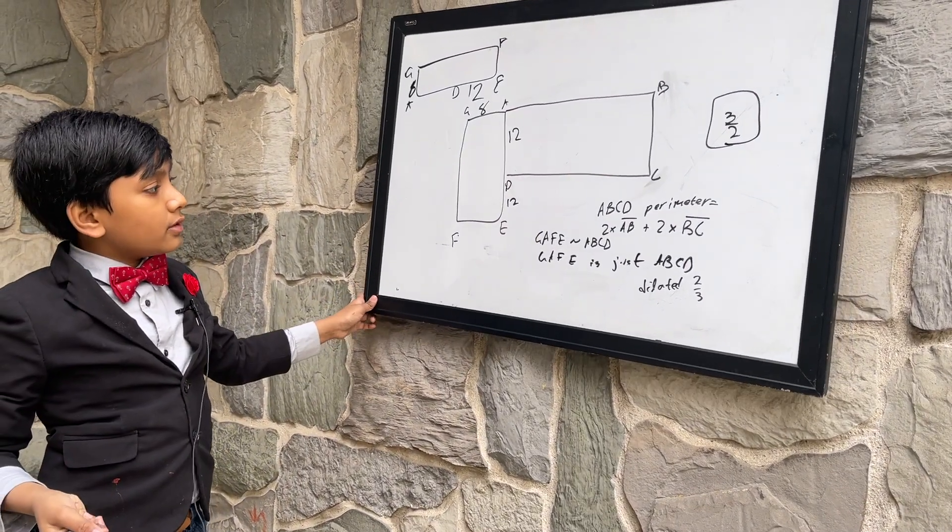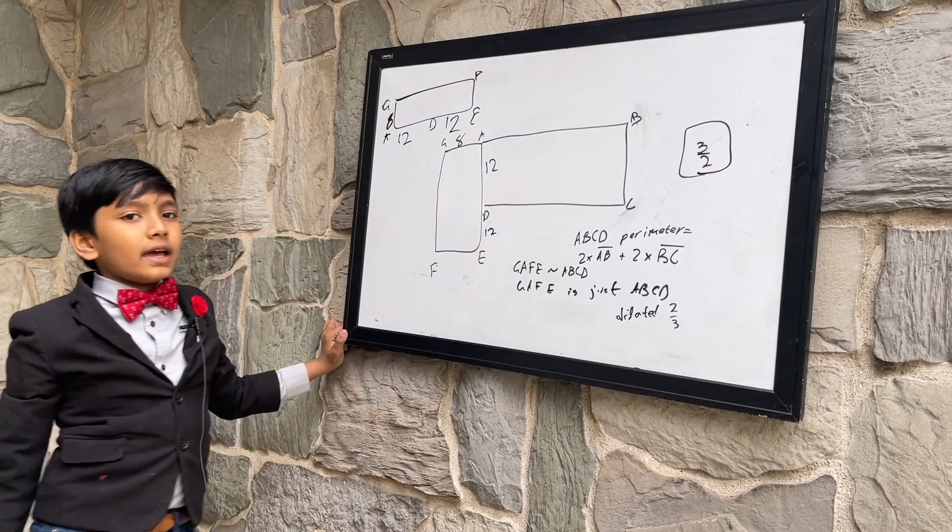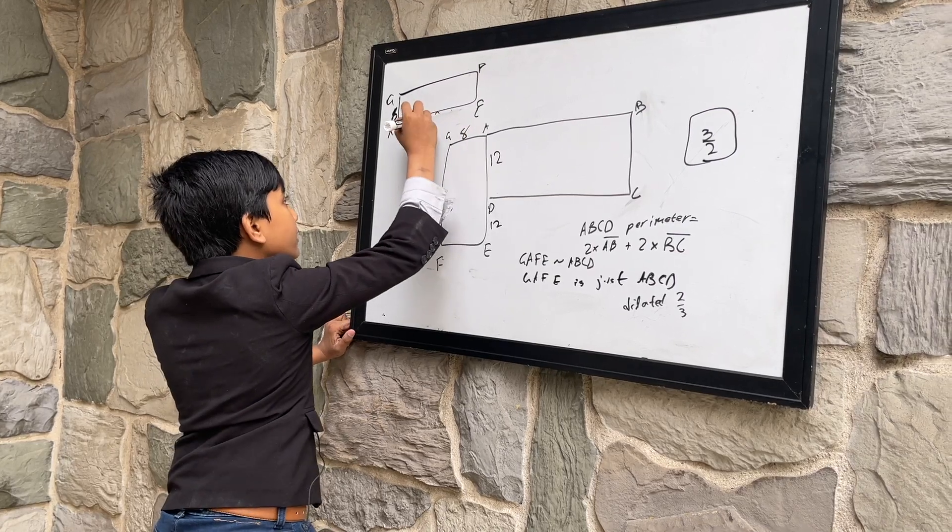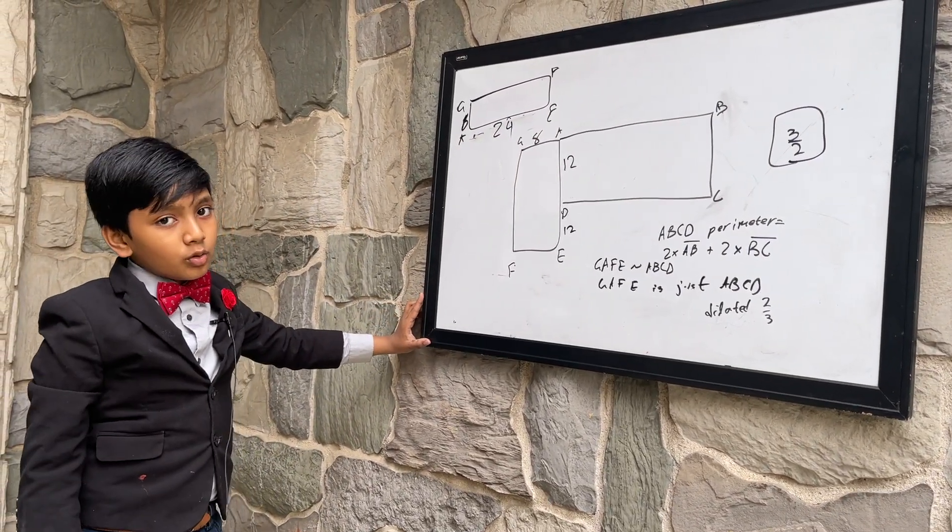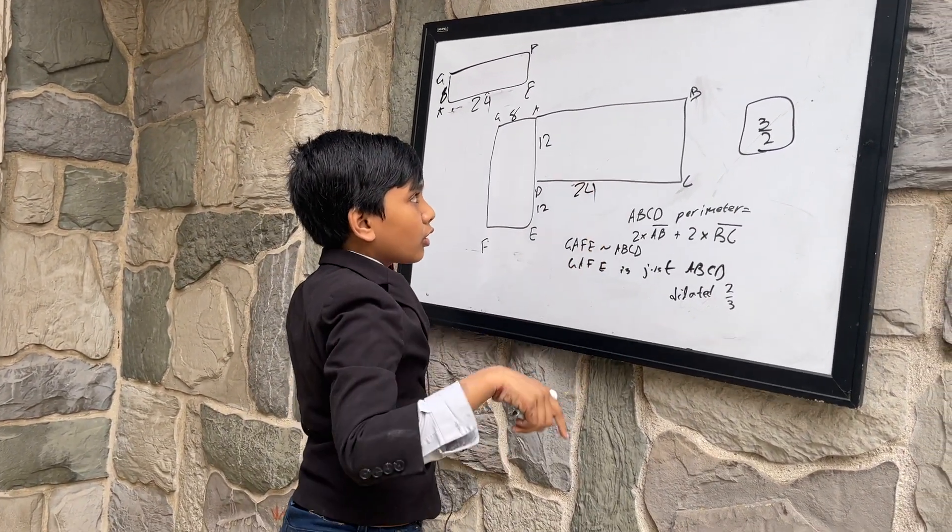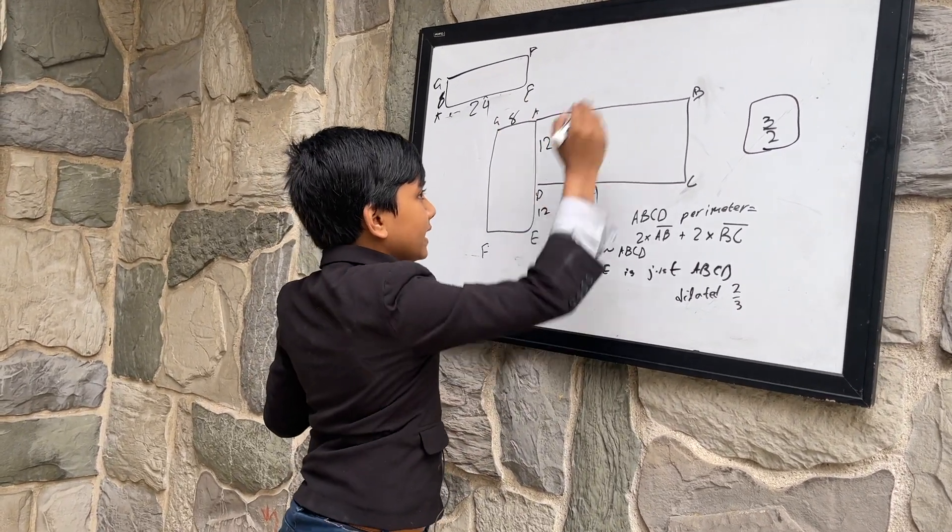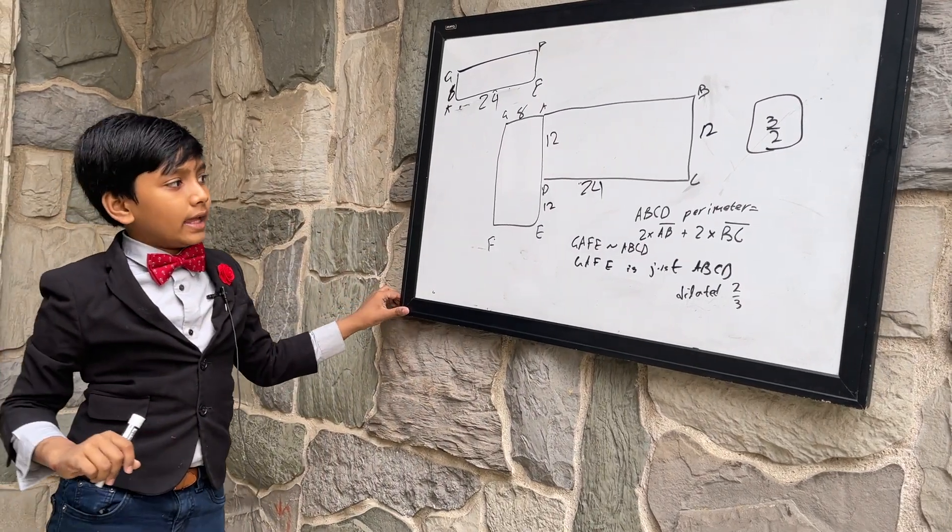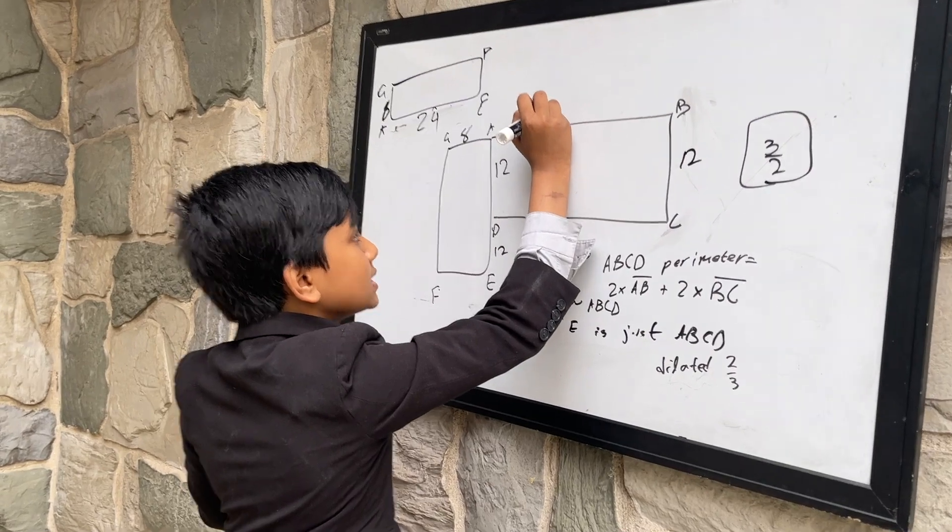Now, the thing is, since AD is 12, that means that AE is 24. And since AE and DC are corresponding sides, then we get 24 over here. Now, since AD, and BC, D is a rectangle, AD and BC must be the same, and DC and AB must be the same.